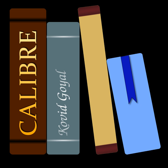Calibre is a cross-platform open-source suite of e-book software. Calibre supports organizing existing e-books into virtual libraries, displaying, editing, creating and converting e-books, as well as syncing e-books with a variety of e-readers.